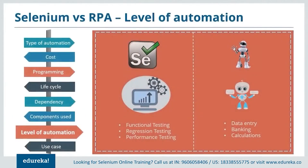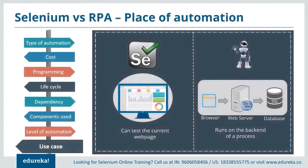Regarding the level of automation: Selenium does not automate any clerical processes; it automates functional, regression, and performance testing. Whereas RPA automates all clerical processes like data entry, calculations, and so on. As for the use case of automation: Selenium works on the front end of the process, whereas RPA works on the back end. Selenium can test only the current web page, whereas RPA deals with time-consuming processes, storing data onto the database via the web server in sequence.